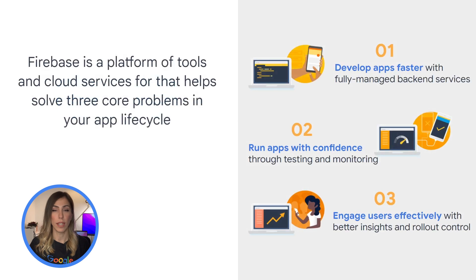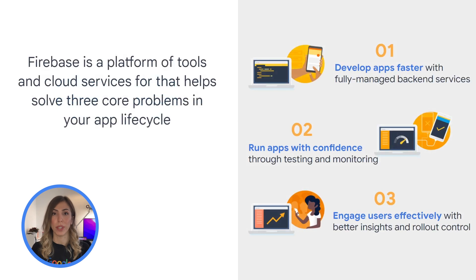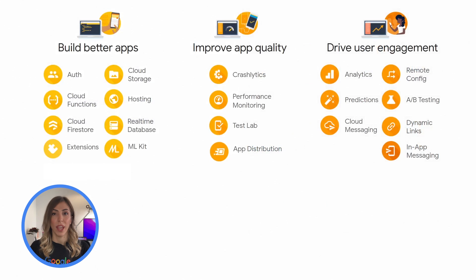Let's take a look at a typical application lifecycle, which has three main phases. The first phase is the development phase, when you're developing a brand new app or adding new functionality to an existing app. Once your application is ready, you want to share it with your users in a controlled fashion, while keeping an eye on any potential crashes that may happen. Finally, once your users start enjoying the new app, you want to learn more about them, identify the most valuable users, and decide to further personalize their experience to retain them. Firebase, with its comprehensive set of tools and cloud services, helps solve these three core problems. There are 19 services divided into three categories: build better applications, improve application quality, and drive user engagement.